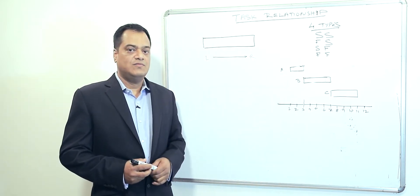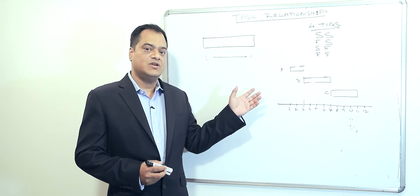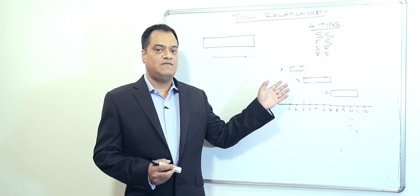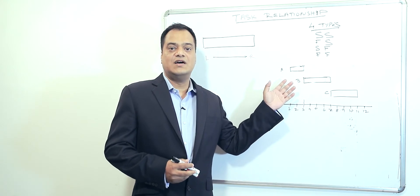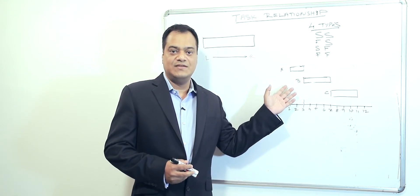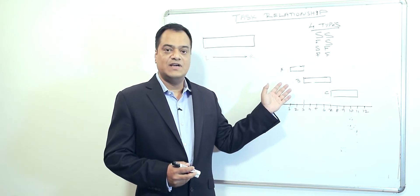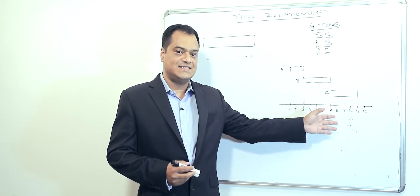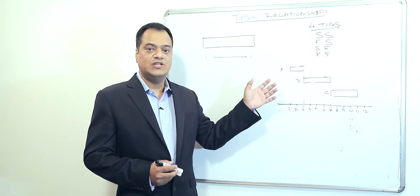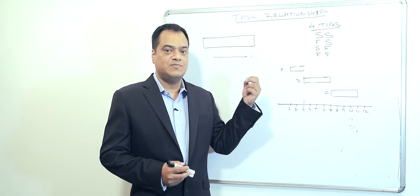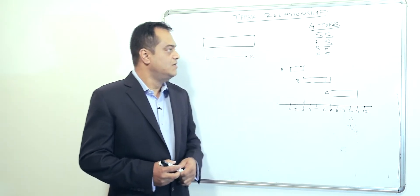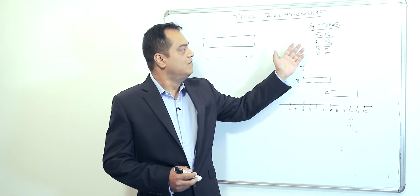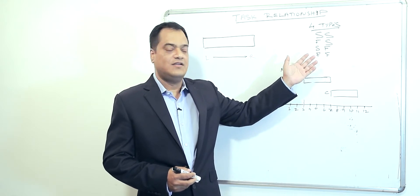This is very important because if tasks are dependent, a delay in the preceding task might have a subsequent effect on the succeeding task. So it is really important to understand the task relationships on a project. We have four types of relationships: Start to Start, Finish to Start, Start to Finish, and Finish to Finish.